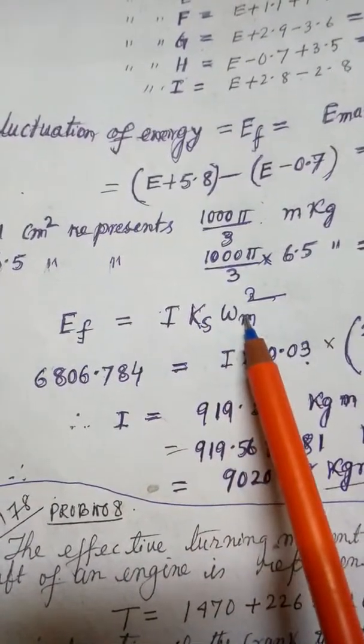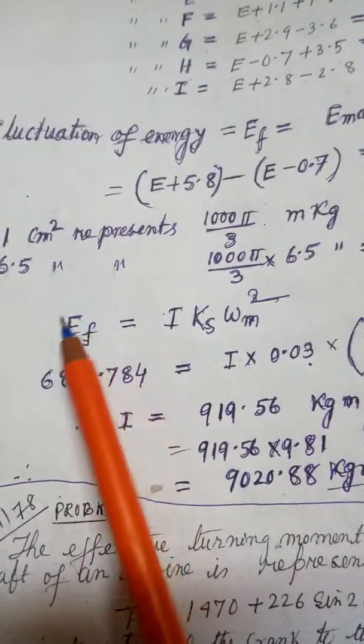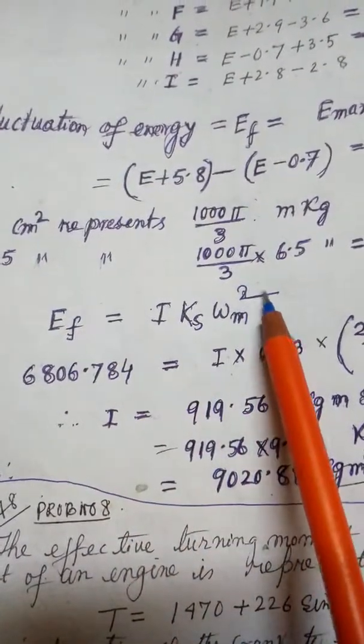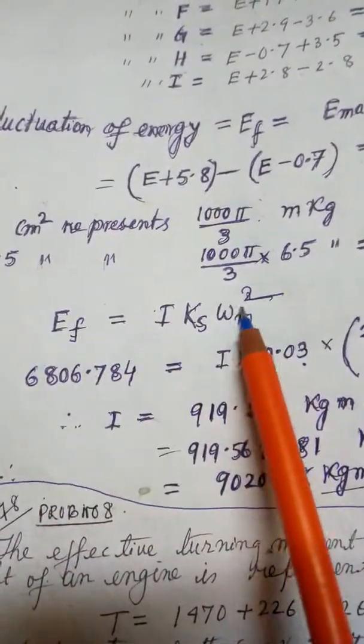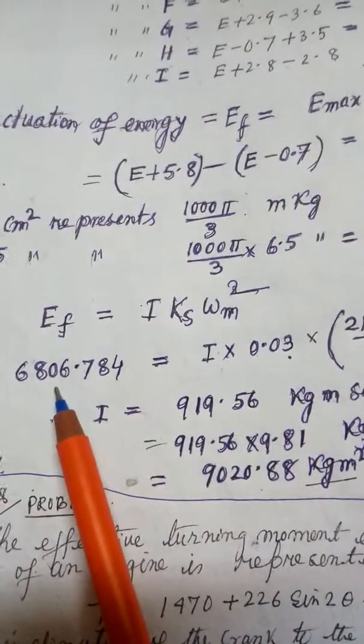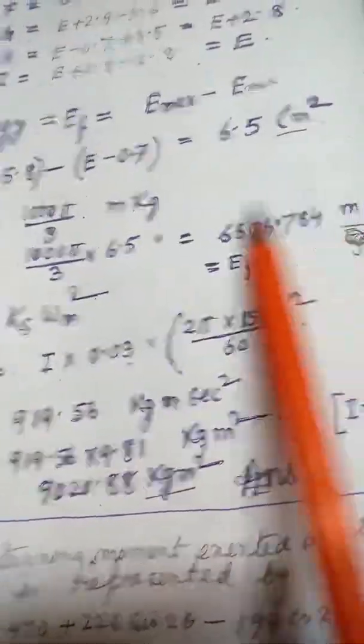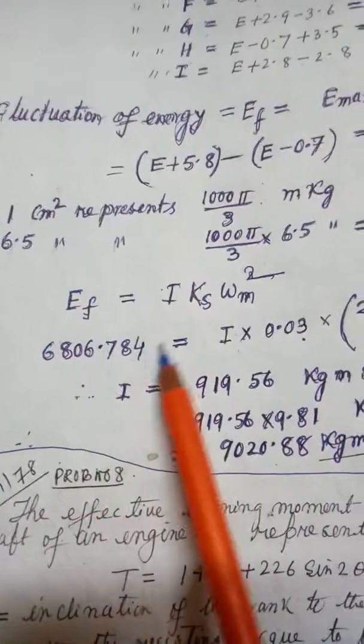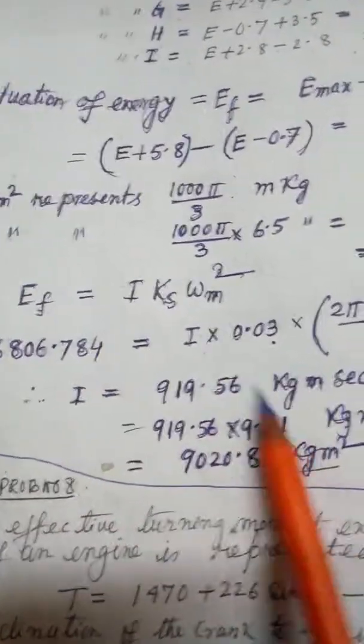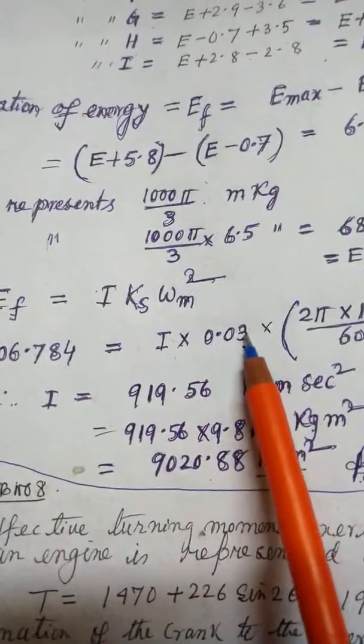Here it is Ef, no problem, the same equation. Putting the value of Ef here, so I is to be found out. This is given: 3% of the speed variation, this is given.